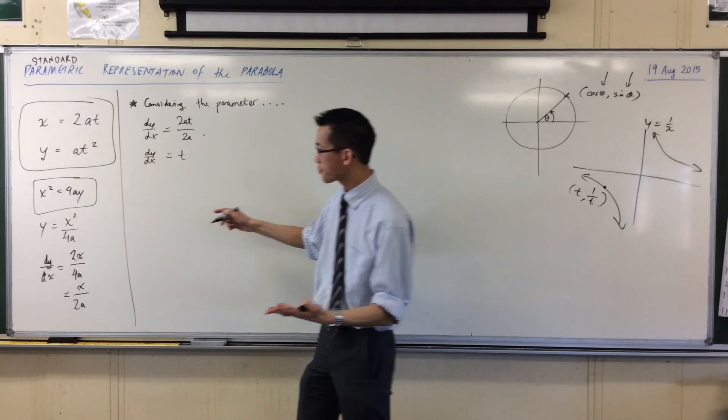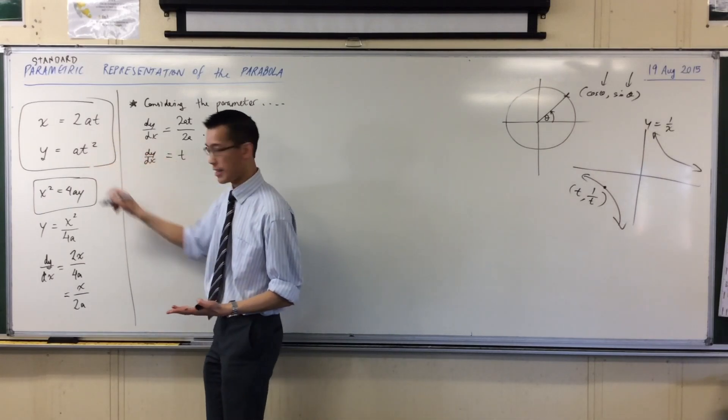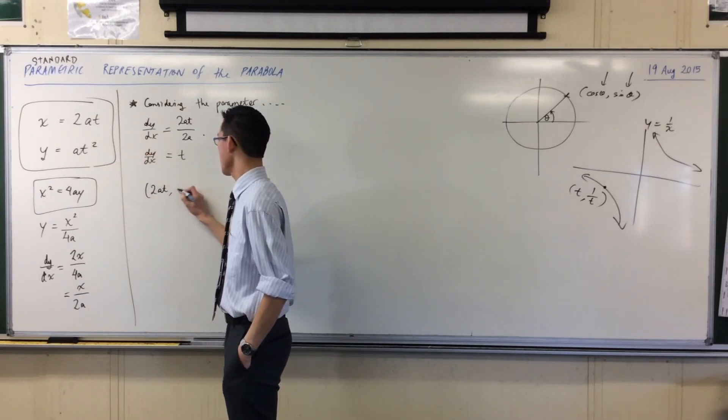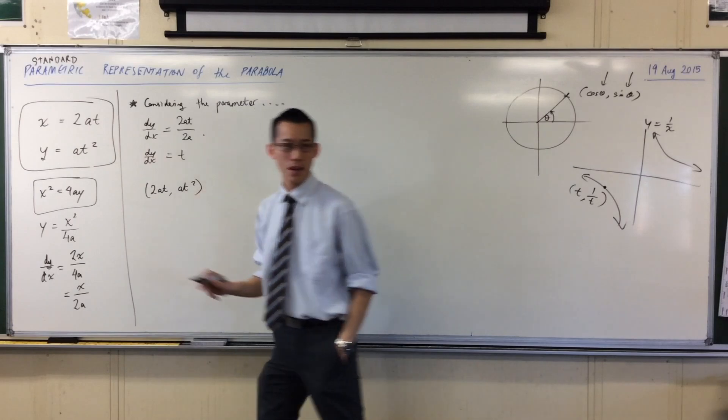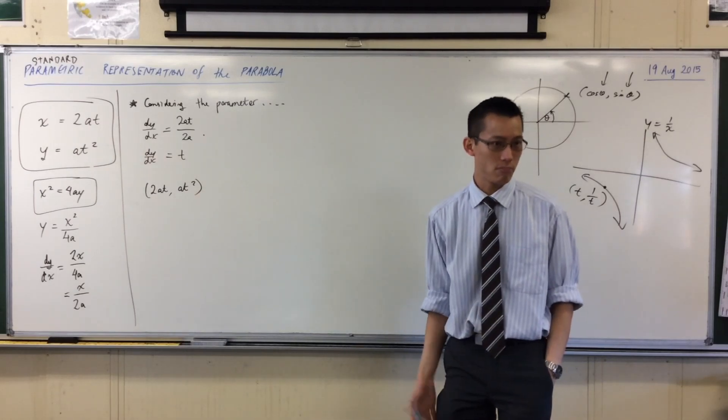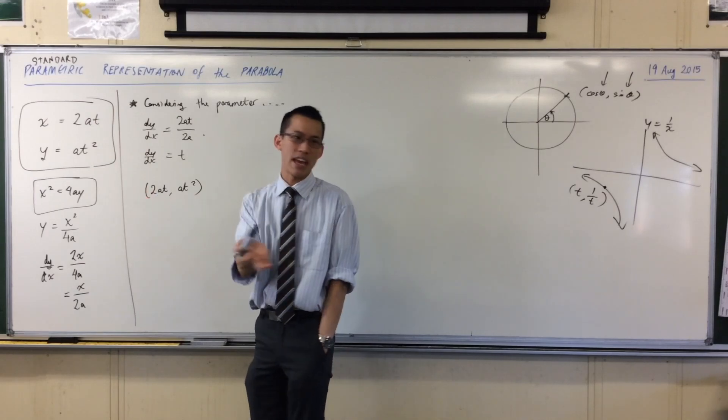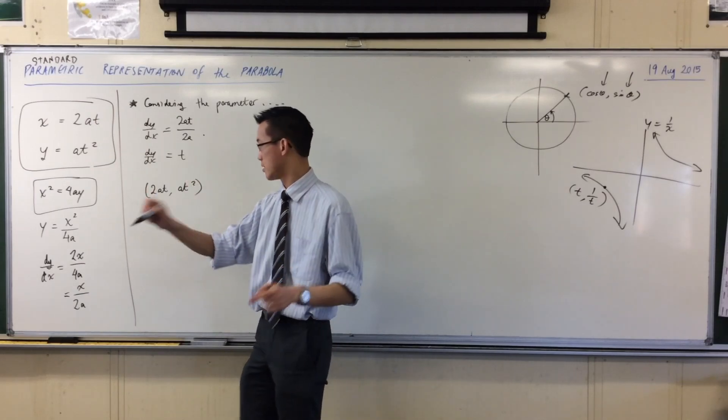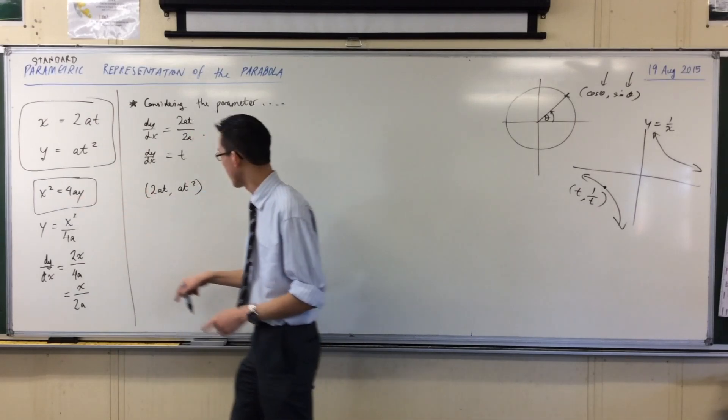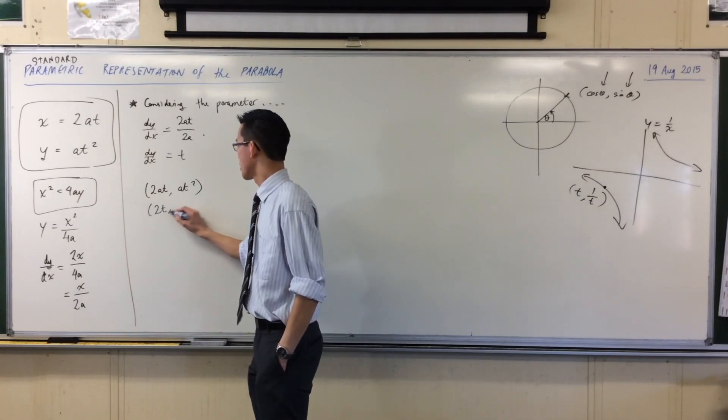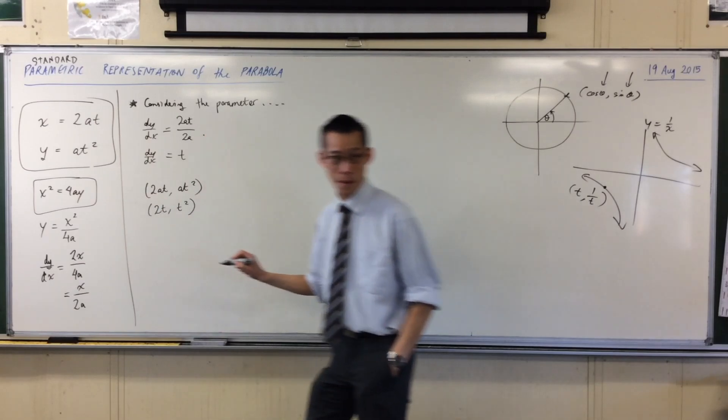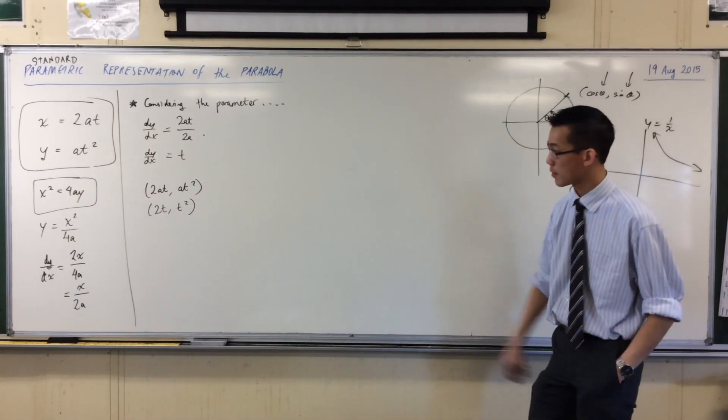All right, 2at, at squared. If I say something like, t equals 1, t equals 1. And let's pick a value of a, say a is 1, that's simple enough. So, this is x squared equals 4y. So, that will be this. In fact, if I remember correctly, this is question 1 in the exercise we've got.